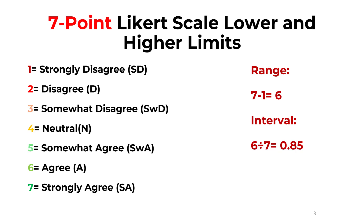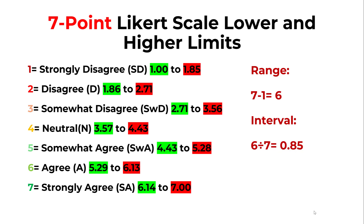The seven-point Likert scale has a range from one to seven. We take the highest value, seven, minus one, which equals six. The interval is then six divided by seven, giving us 0.85. This is the interval we use between each rank.